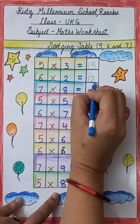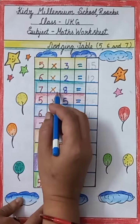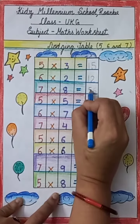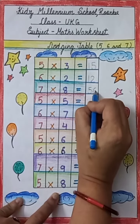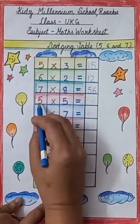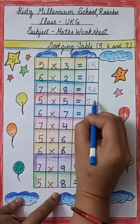And we will speak like this: 6 2 j 12. Now this is 7 into 8 equals to 56, and we will speak like this: 7 8 j 56. This is 5 into 5 equals to 25, and we will speak like this: 5 5 j 25.